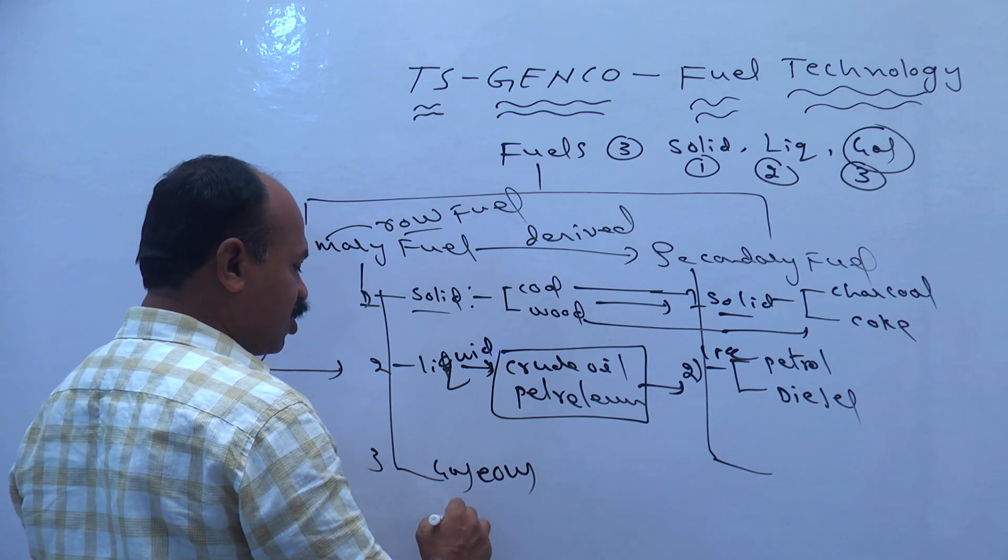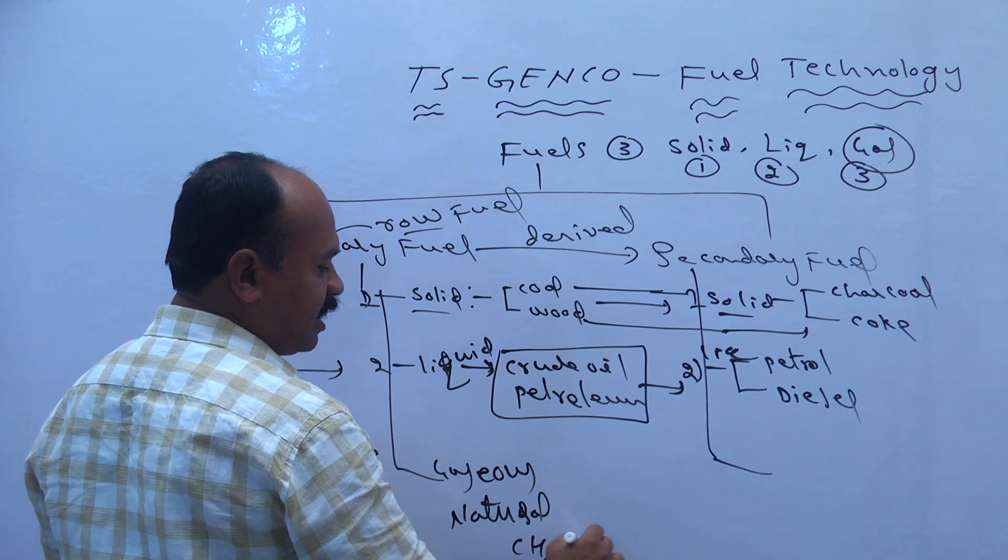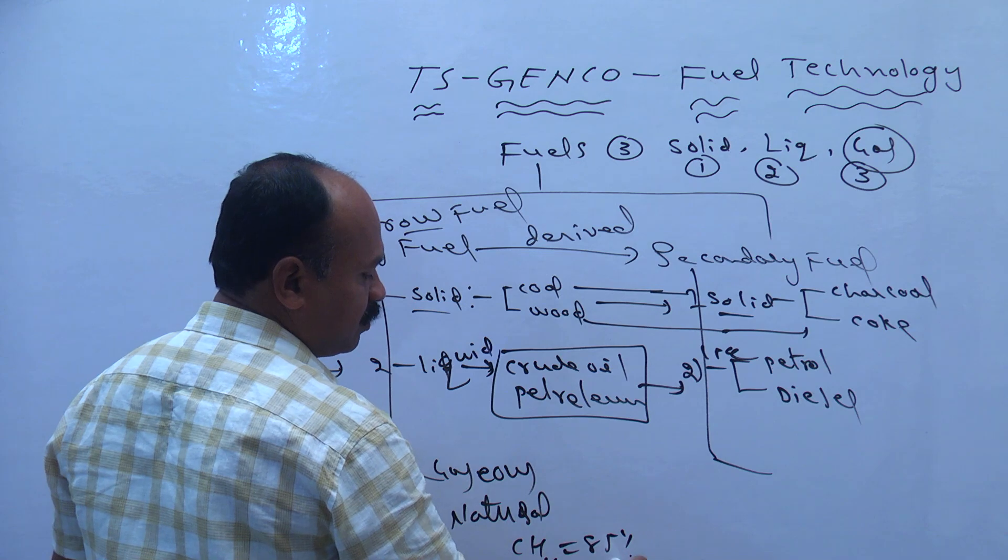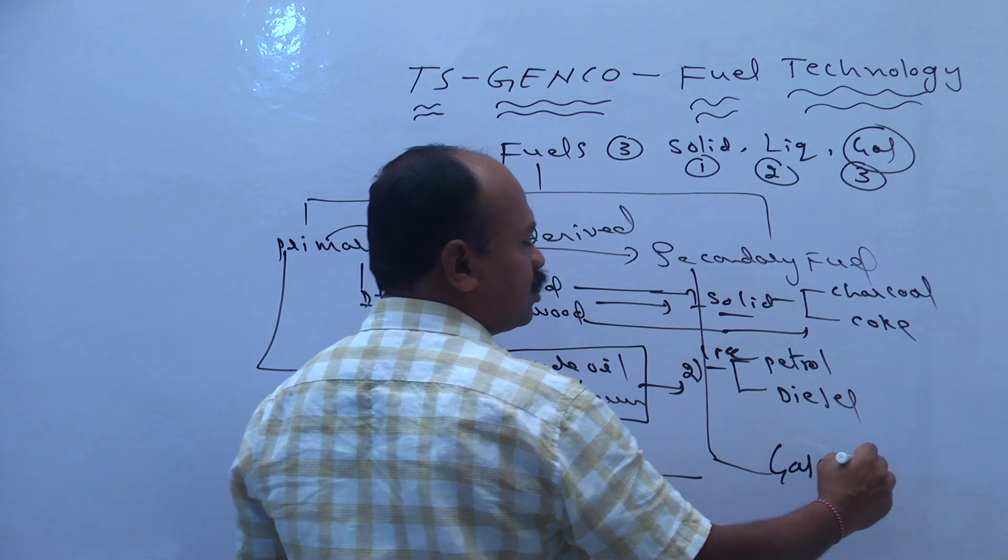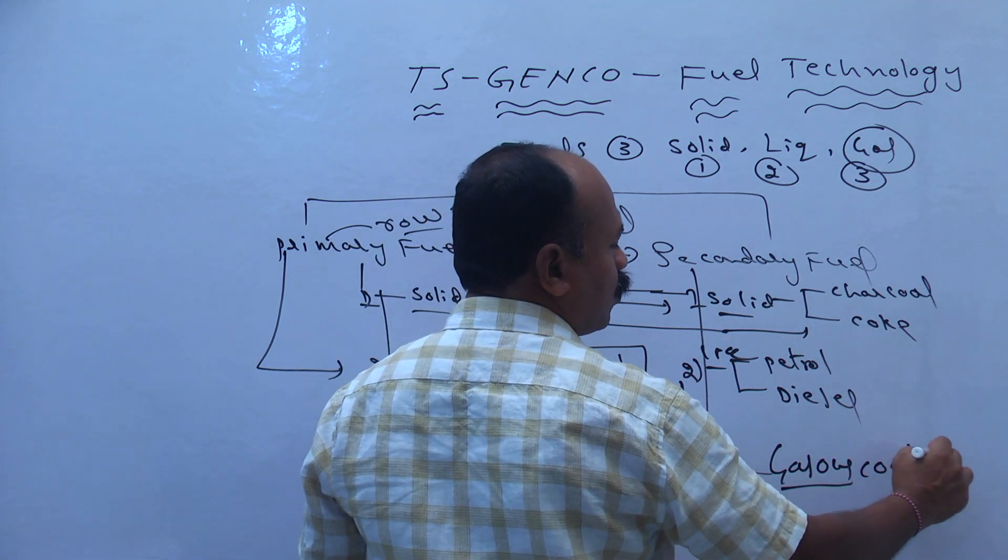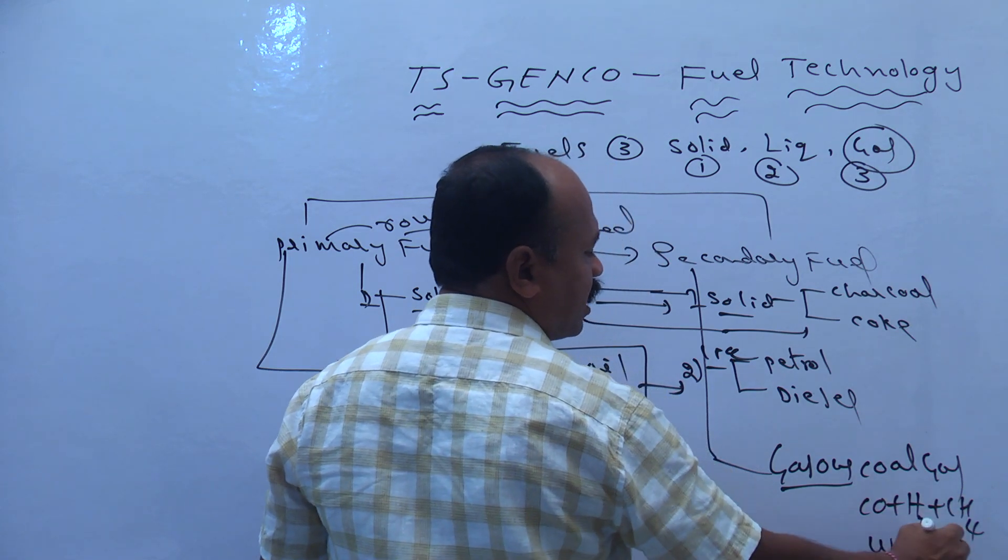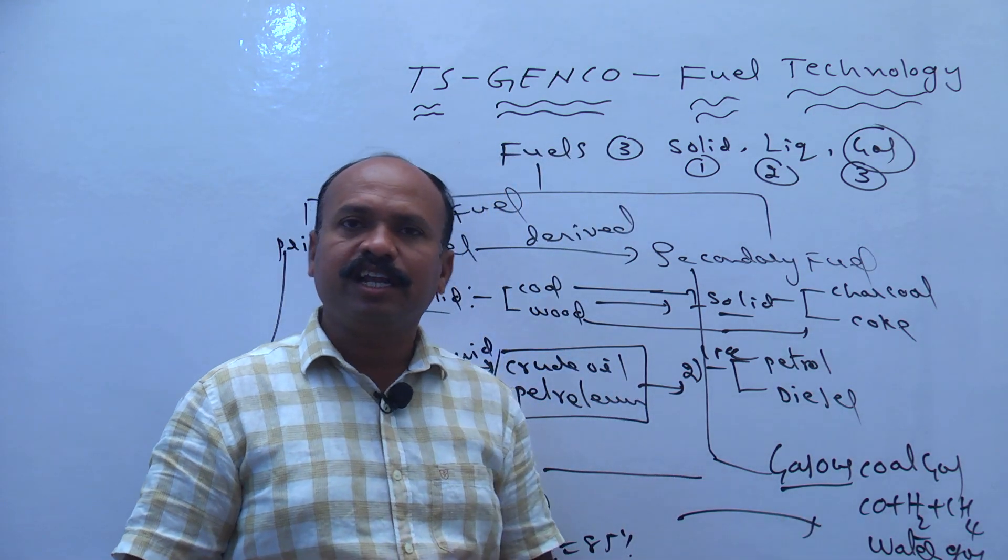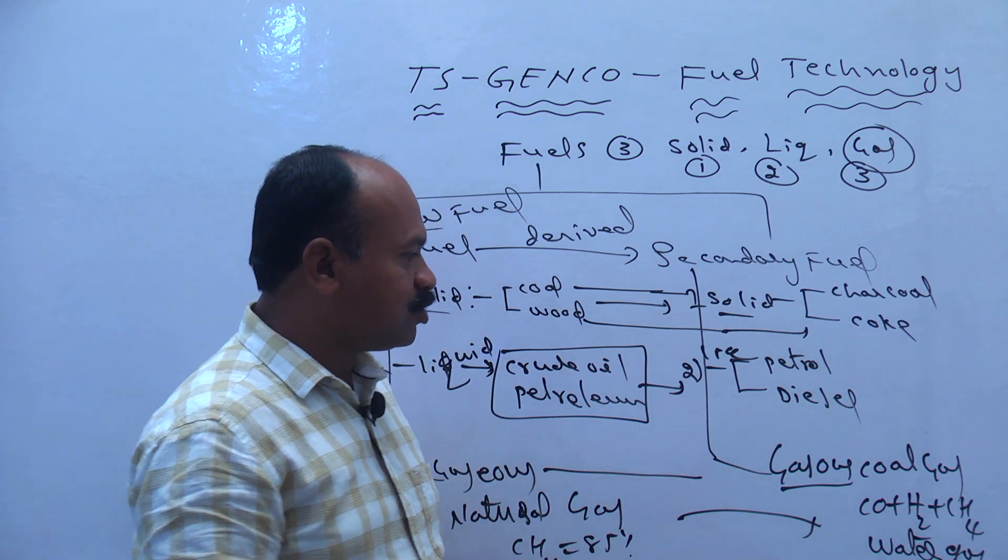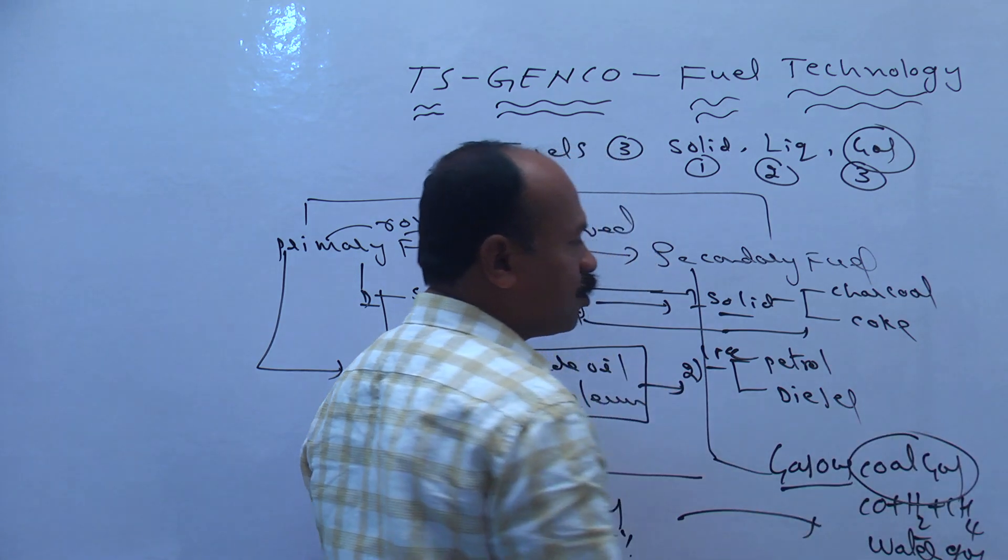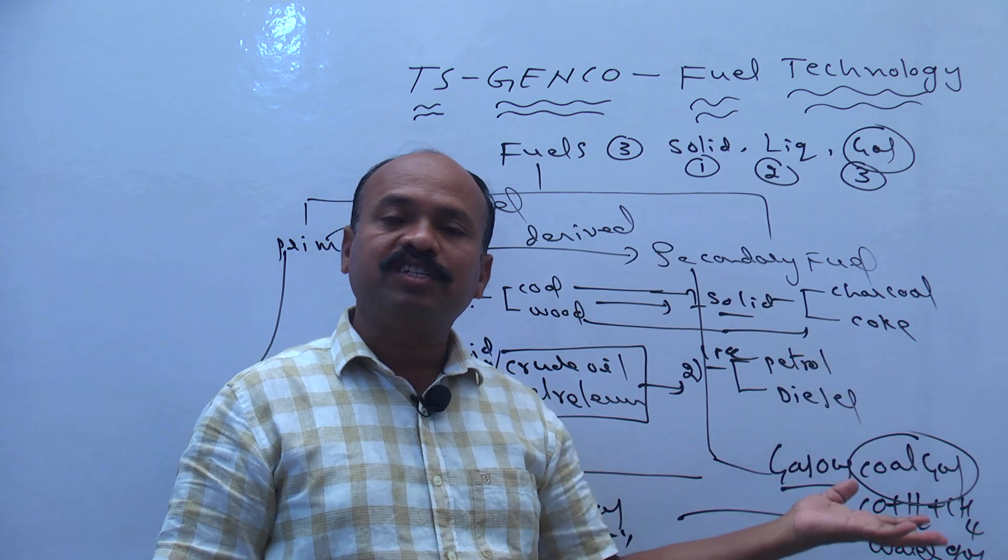Gaseous fuels, natural gas. Natural gas, methane is 85%, ethane is 15%. Then change to gaseous fuel. It changes to coal gas. Coal gas means carbon monoxide, hydrogen, and methane. Coal gas and water gas, producer gas. Natural gases change to coal gas. The primary fuel is changed to secondary fuel.